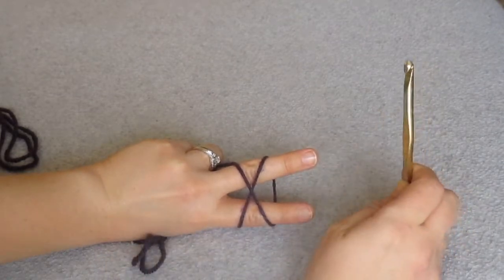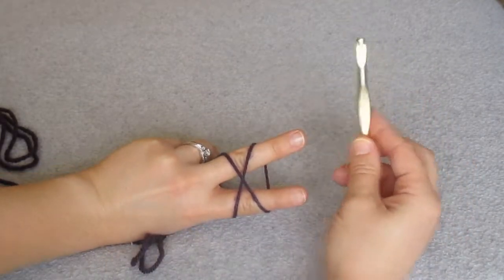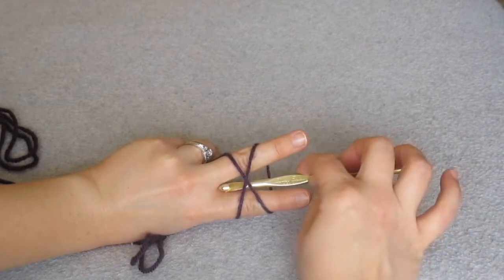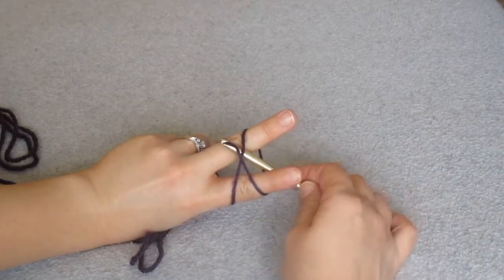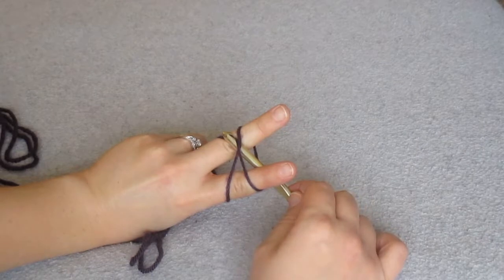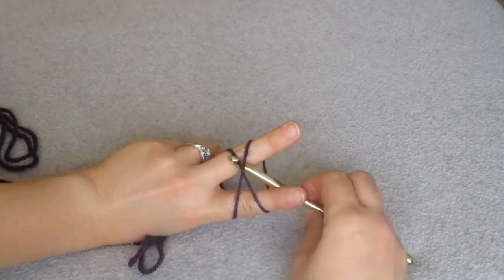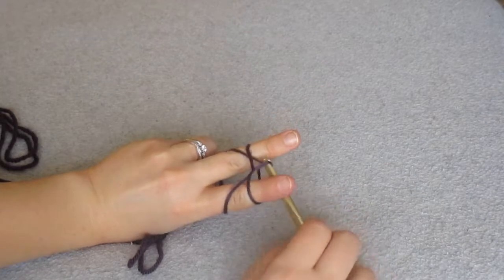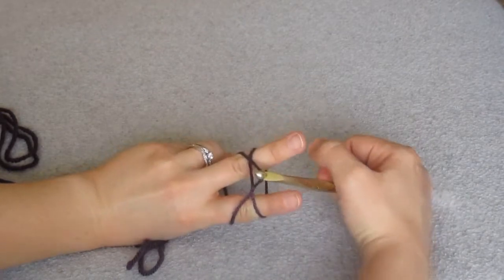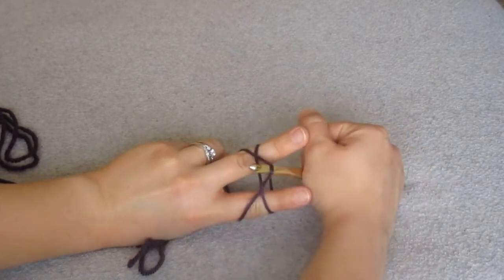Now comes the time we use our hook. You want to take that hook, put it right under that X, and you're going to grab the yarn that is crossed over and is above the bottom yarn. You're going to pull it through so that you have this nice loop on your hook.